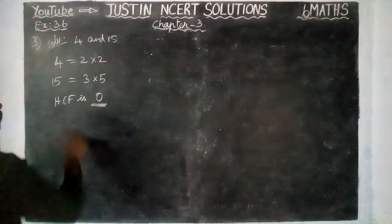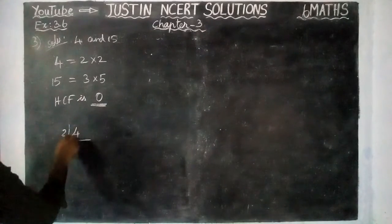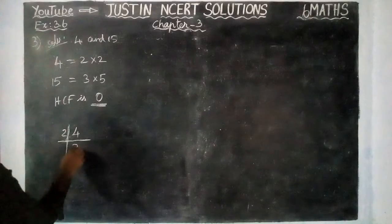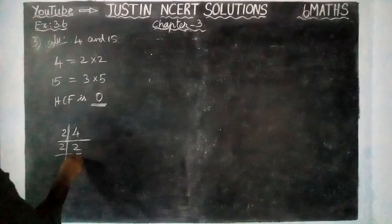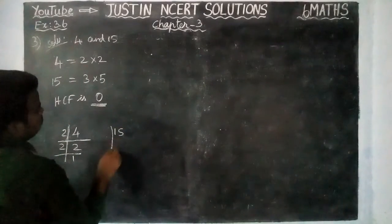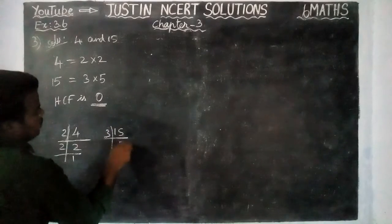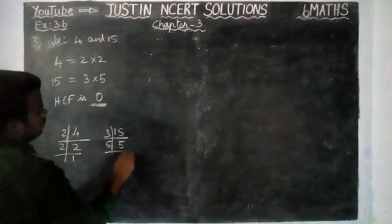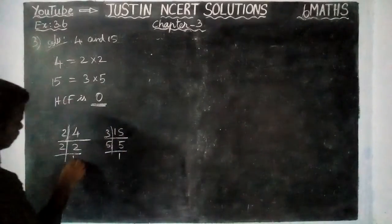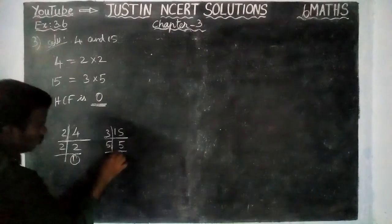When we are dividing these 4, 2 times 2 is 4. Again, we are dividing by 2, we are getting 1. Next, for 15 also, we are dividing by 3. 3 times 5 is 15. Again, we are dividing by 5, we are getting 1. So here, common factor 1 is coming.